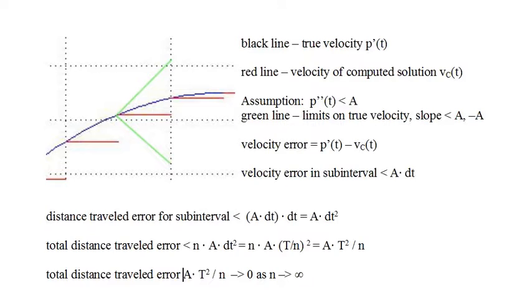The total distance traveled error is less than the sum of the maximum errors for each subinterval, and with n subintervals that number is n times a times dt squared. With a total interval length of t — 10 in our example — the subinterval length is dt equals t divided by n. So the total distance traveled error is less than n times a times dt squared, which equals n times a times t over n squared, which equals a times t squared divided by n. And a times t squared divided by n goes to zero as n gets larger. That is, Euler's method calculates accurate approximate solutions.